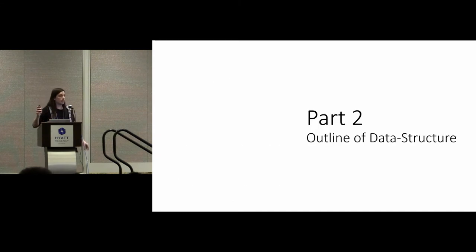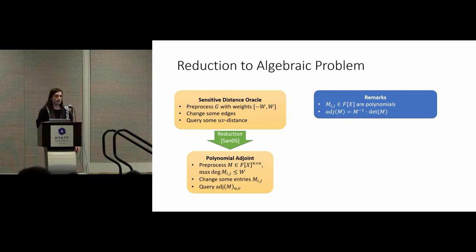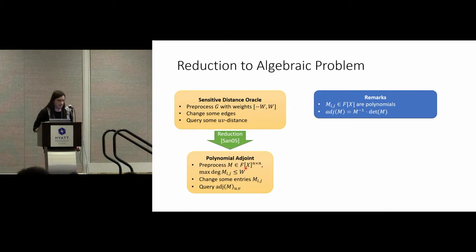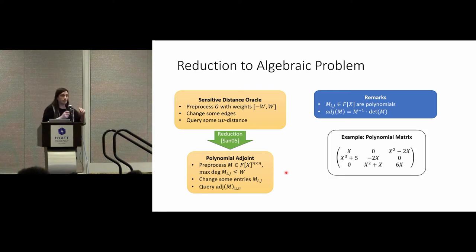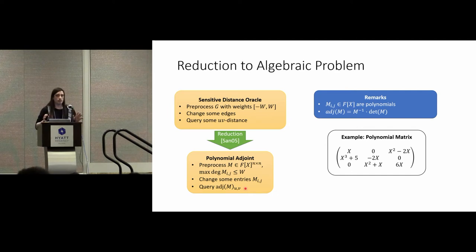Now I want to talk about how we get this result — how does this data structure work? The main idea is that we reduce this to an algebraic problem. We have our initial graph problem: preprocess graph G, change some edges, then compute the distance. Sankowski showed that this is equivalent to an algebraic problem where we are given some matrix M whose entries are polynomials — so instead of numbers, we have polynomials in the matrix entries. Then instead of changing edges, we change some entries of this matrix, and in the last phase we compute one entry of the adjoint.